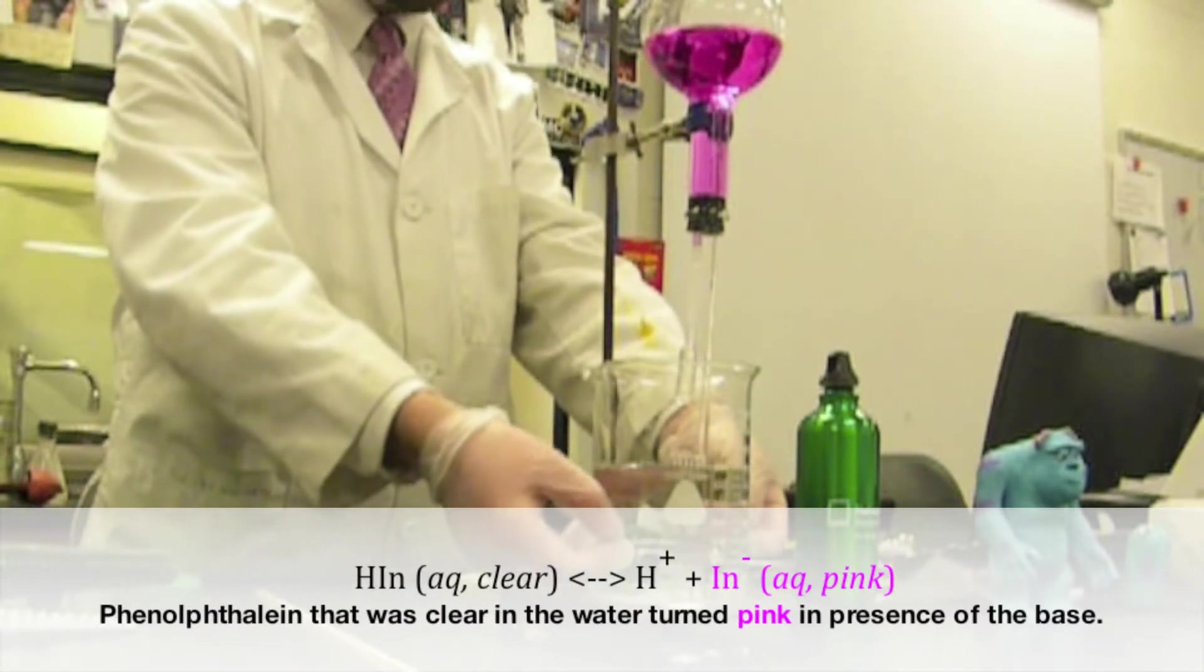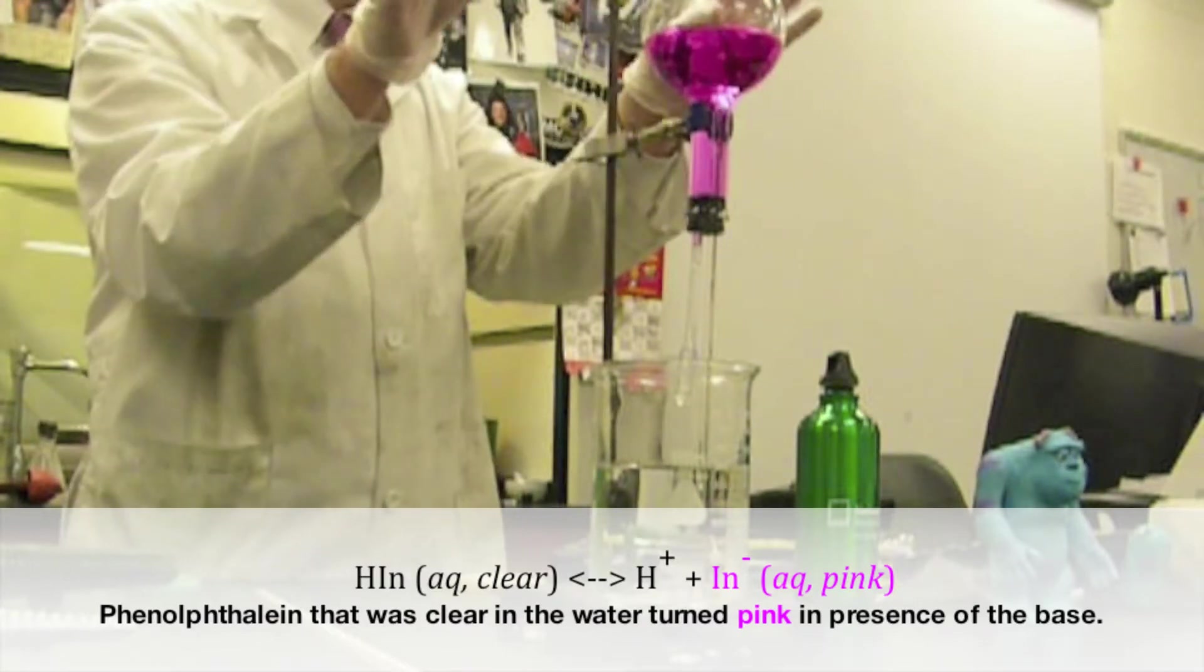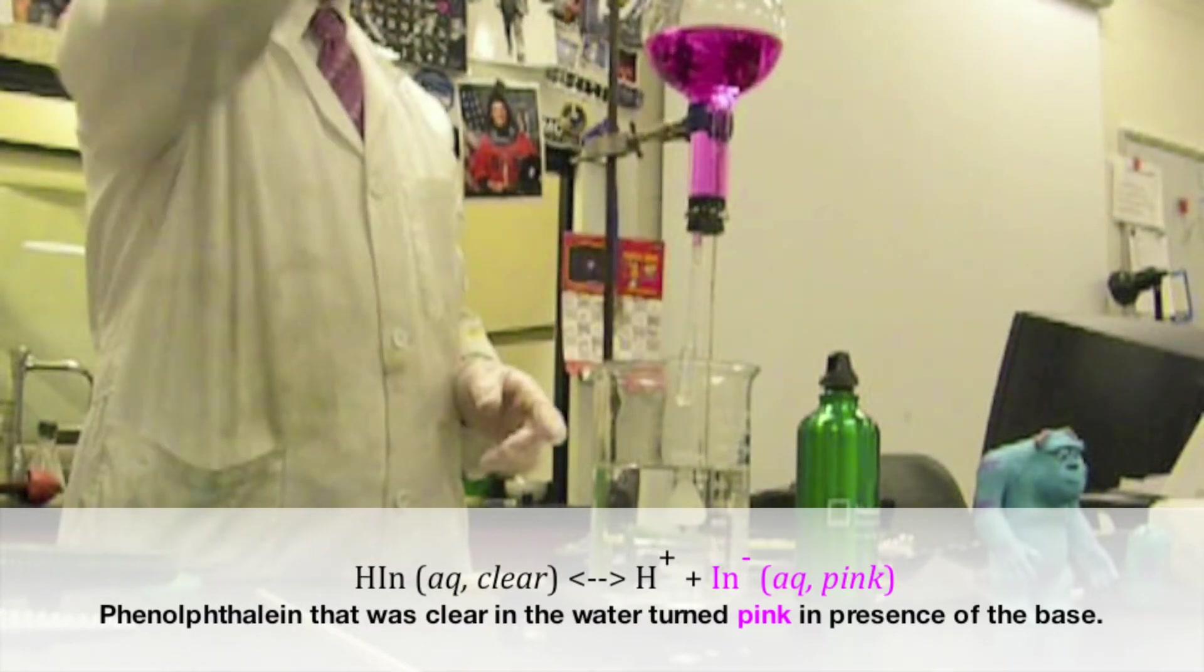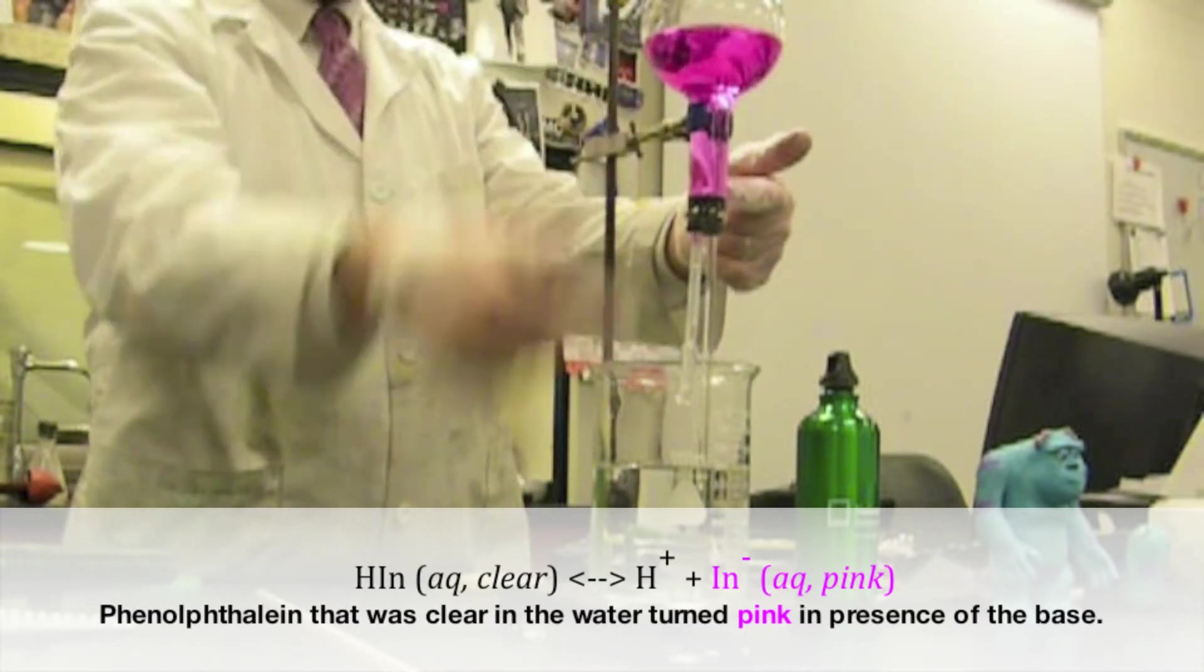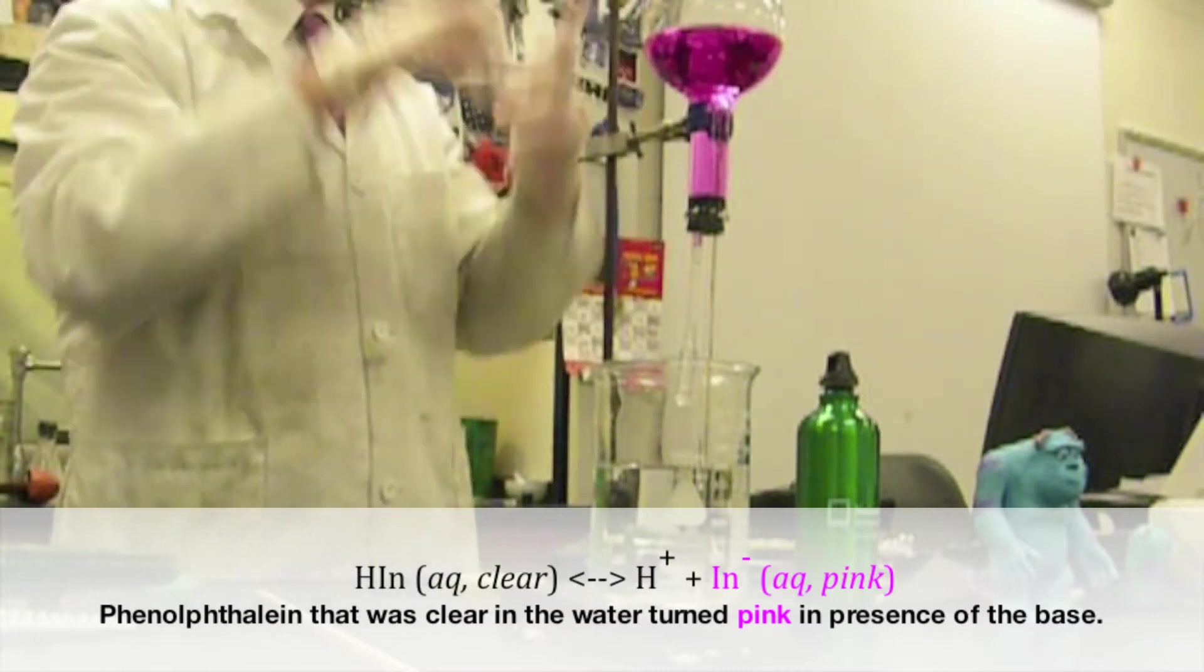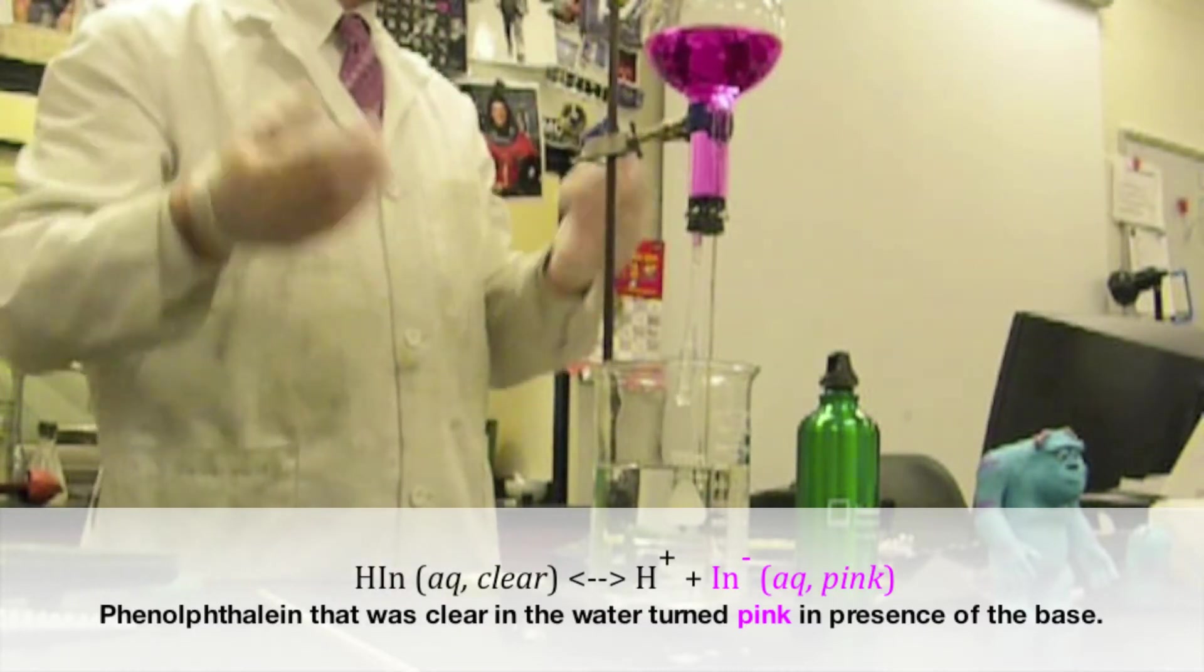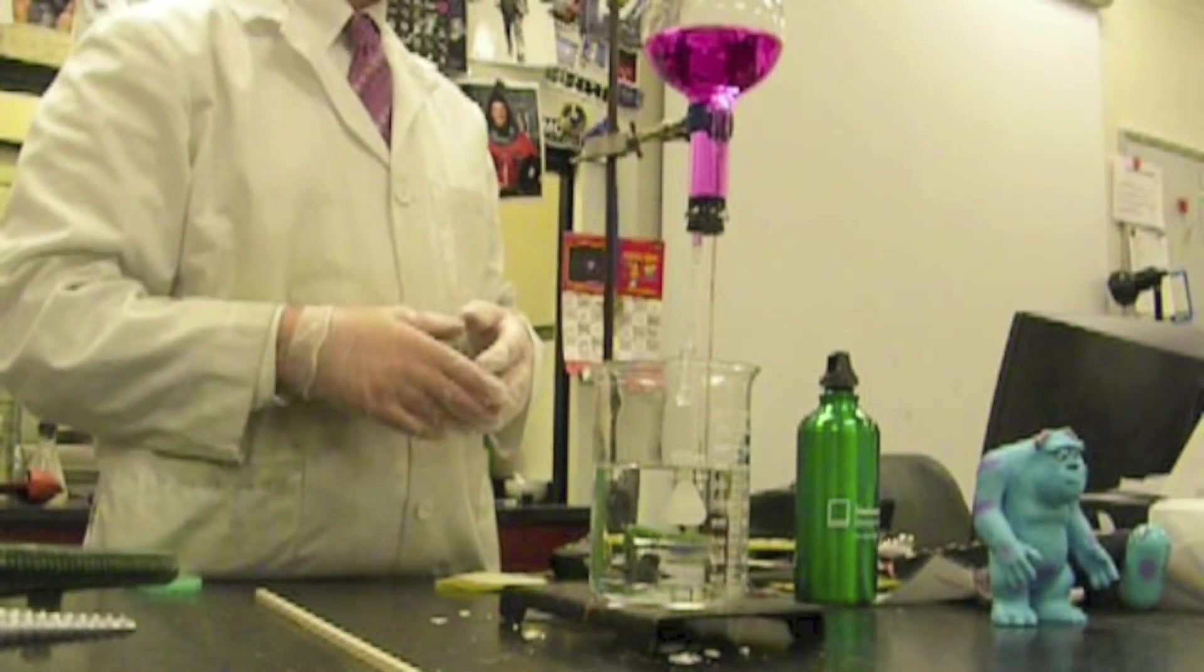So when it goes up the tube, it begins to dissolve the ammonia gas even more. Because this little squirt of water only dissolves a little bit of the ammonia gas. The water rushing up then dissolves more. As it dissolves, ammonia forms ammonia hydroxide. Hydroxides are bases, and we get a base solution that causes the phenolphthalein to turn pink.